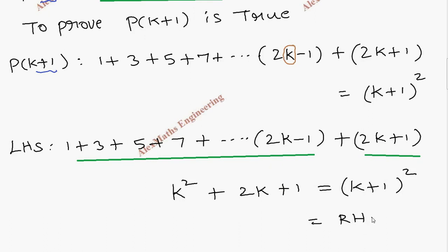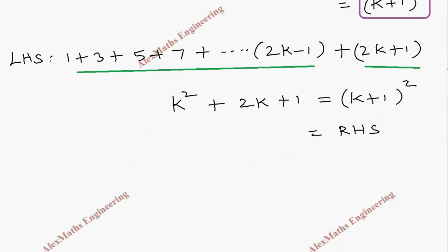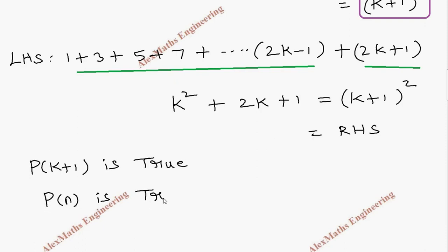k squared plus 2k plus 1 is nothing but (k plus 1) whole squared, which is exactly the right hand side. We took the left hand side and arrived at the right hand side. So P of k plus 1 is true, and hence P of n is true for all n belonging to the natural numbers.